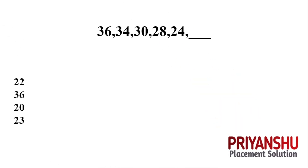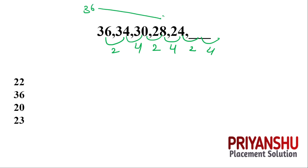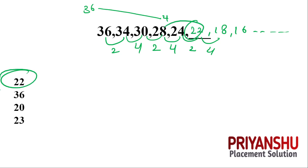The next question: 36, 34, 30, 28, 24, 20, 24 — let us see the differences: minus 2, minus 4, minus 2, minus 4, alternating. The values are decreasing, so from 24, minus 2 = 22, minus 4 = 18, and so on. The final answer is 22.